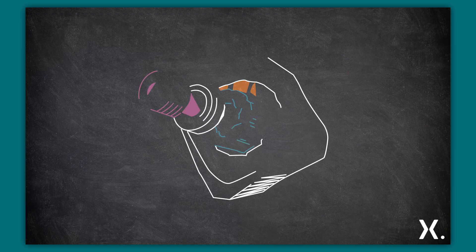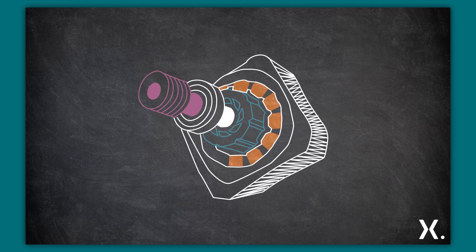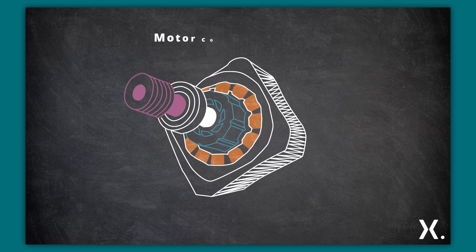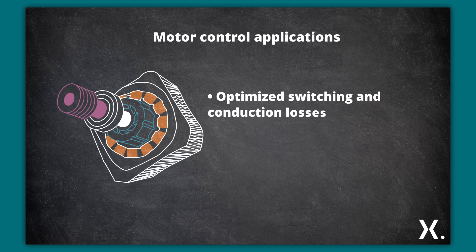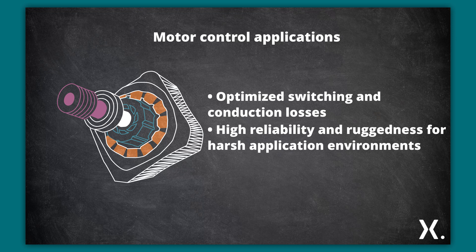Developed to operate between 0 and 20 kHz, Nixperia's medium-speed M3 IGBTs have optimized switching and conduction losses for motor control applications. In addition, their high reliability and ruggedness can support harsh application environments.